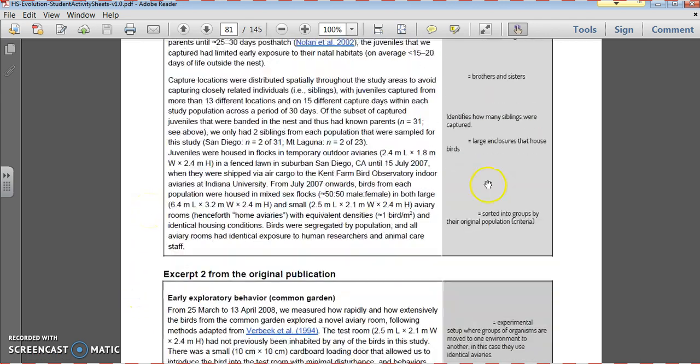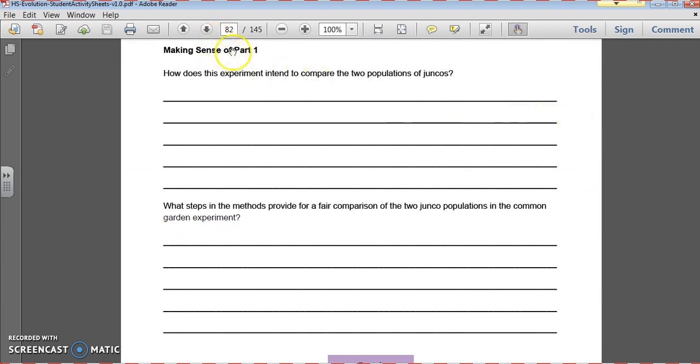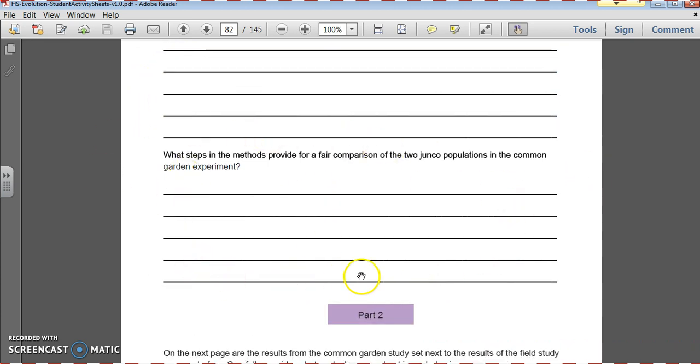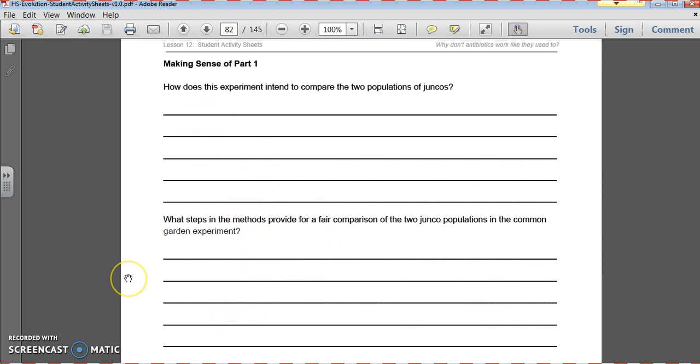So once you have read this little excerpt, what we're going to do is we're going to move ahead a little bit. There's some questions in your student activity packet that say making sense of part one. How does this experiment intend to compare the two populations of juncos? Not why. We already know why. We want to figure out if these behaviors are genetic or if they're learned. So how does it seek to do that? And then what steps in the methods provide for a fair comparison? What that means is what are specific parts of the methods that the researchers are using to make sure that nothing is interfering with these two populations? The only thing we want to try to figure out is, is this trait genetic? And so what are some fair portions that make this a fair comparison? So respond to these questions in writing, please, just so you can get a sense for thinking about that.